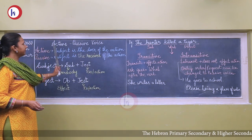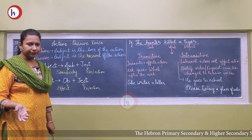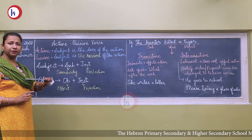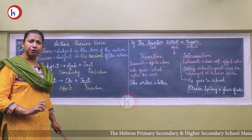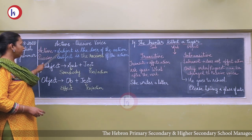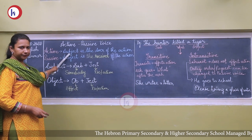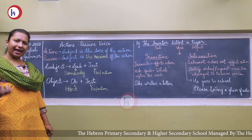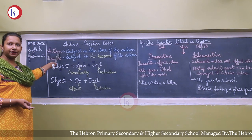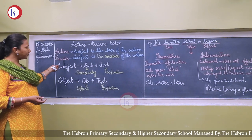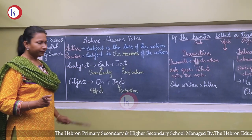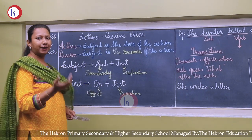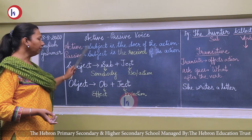Which sentences can be changed into active voice, and which can be changed into passive voice? Not all sentences can be changed into passive voice. In active voice, the subject is the doer of the action. In passive voice, the subject is the receiver of the action — the subject is receiving the action done by somebody.